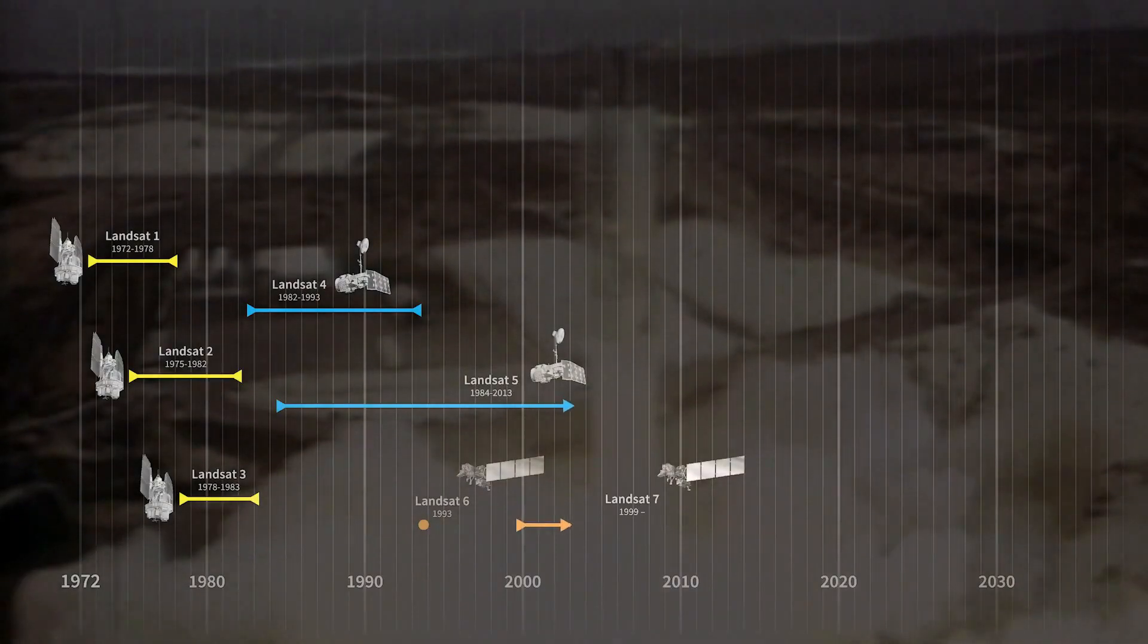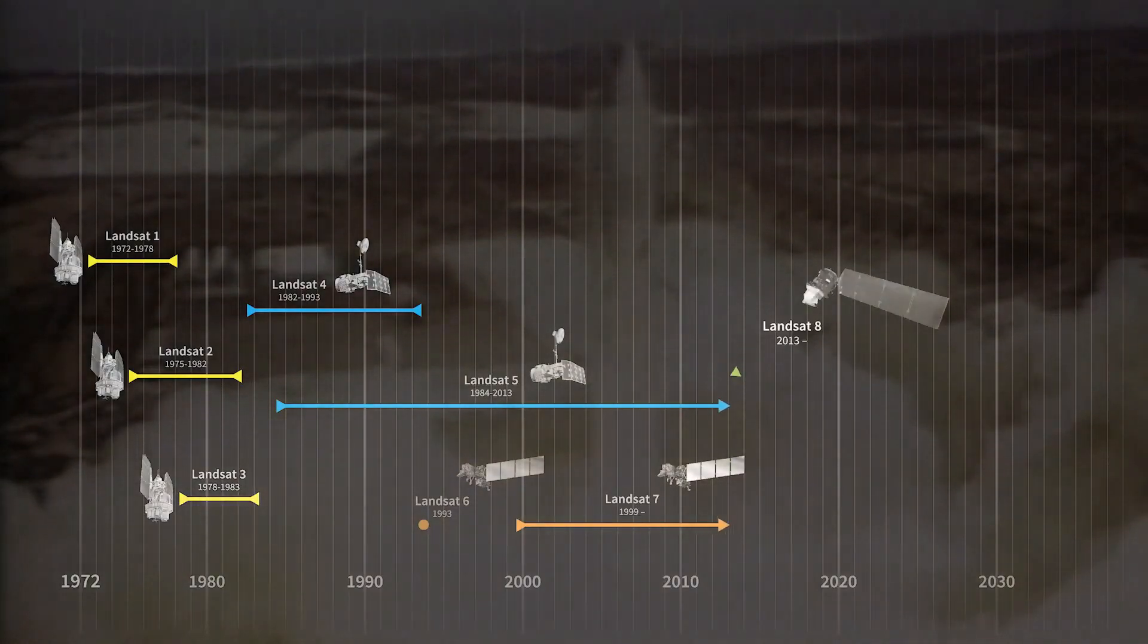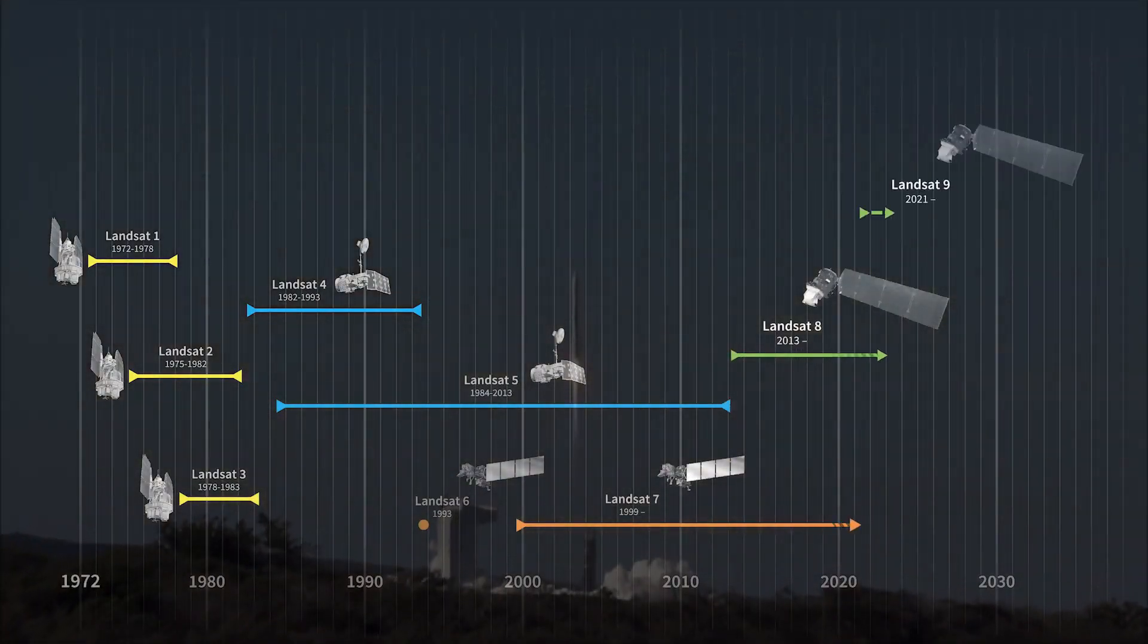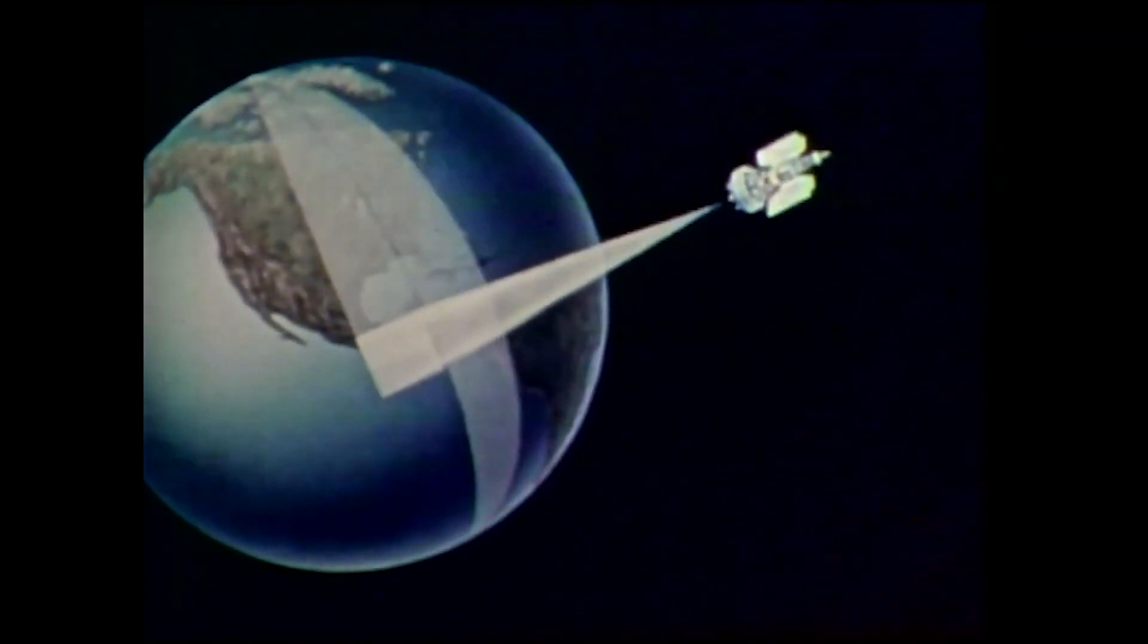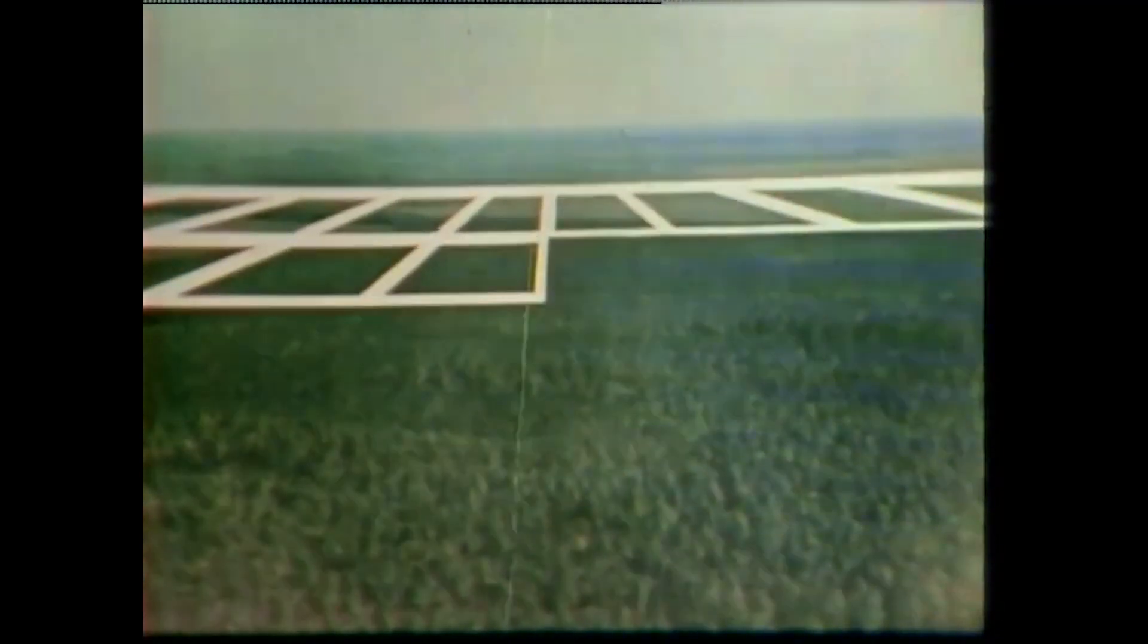At least one Landsat satellite has been orbiting Earth since 1972. That's nearly 50 years of steadfast observation. That first Landsat proved we could gather digitally encoded data from space and change the way we look at Earth forever.